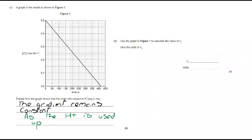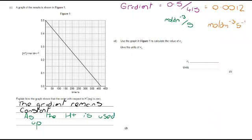Use the graph in figure one to calculate the value of K1. Give the units of K1. So we're going to calculate the gradient. I am using as much of the space as I can. So that's 0.5 up and 415 over, giving me a value of 0.0012. In terms of the units, the units for rates, which is what the gradient is showing us, are always mol dm to the minus 3 s to the minus 1. But we can substitute those units into the calculation to find out. And mol dm to the minus 3 over s is mol dm to the minus 3 s to the minus 1. And we've got our answer.